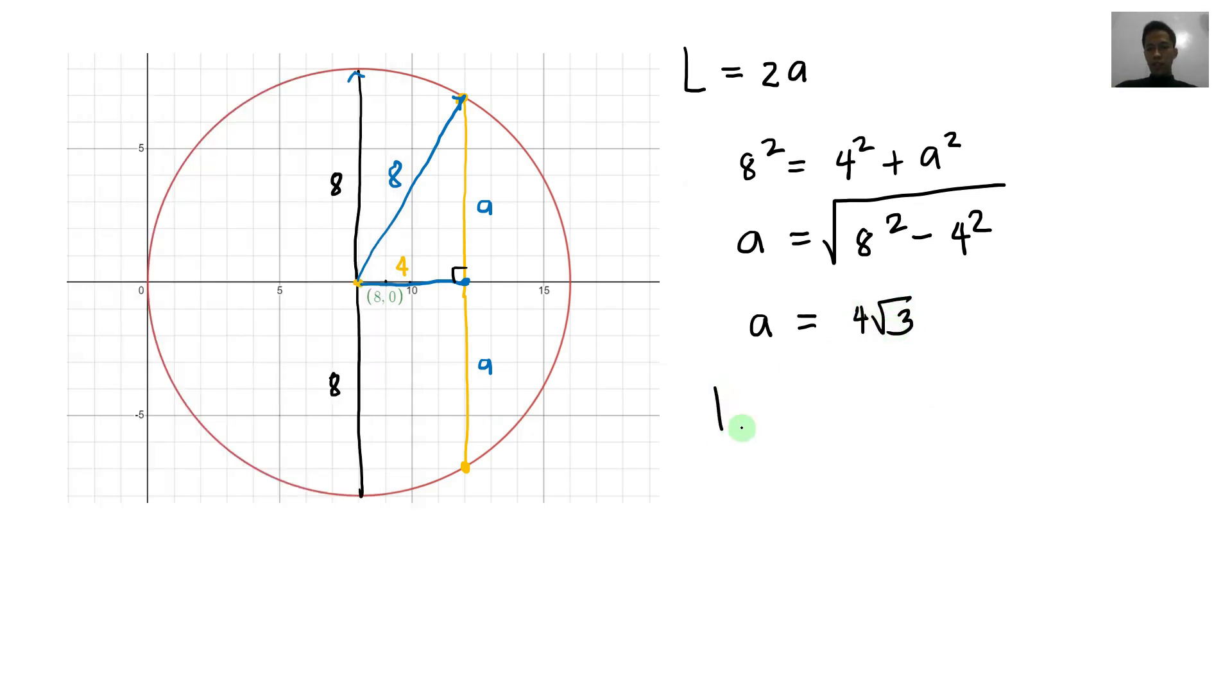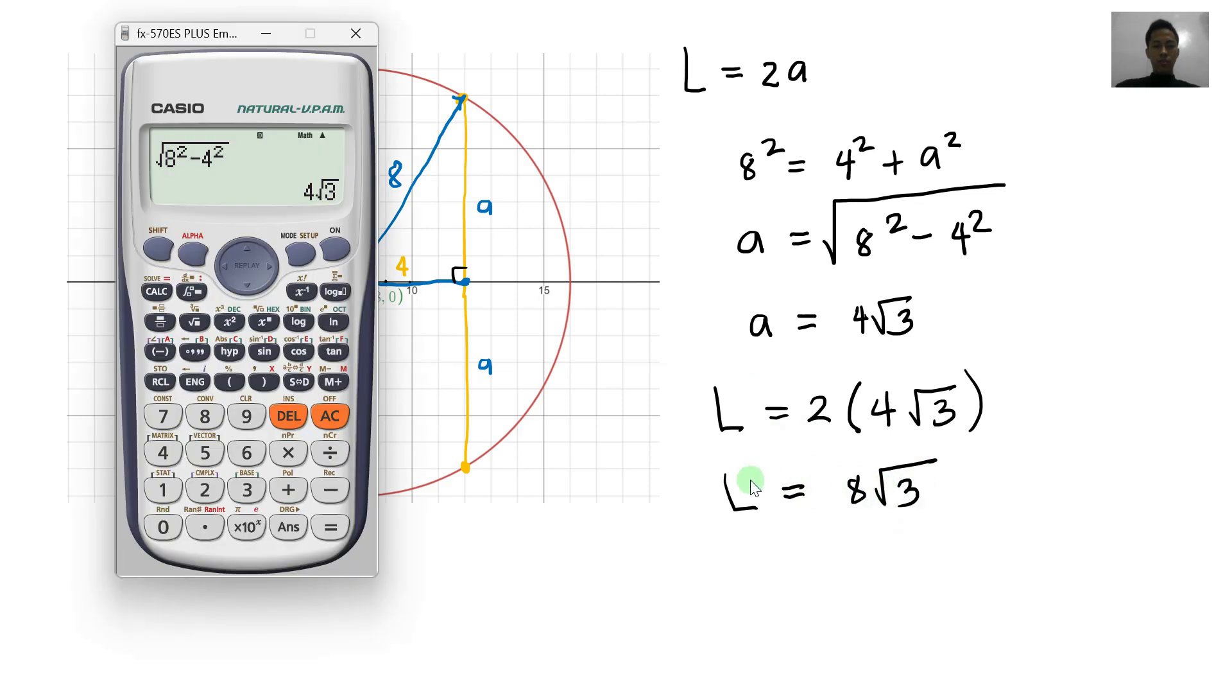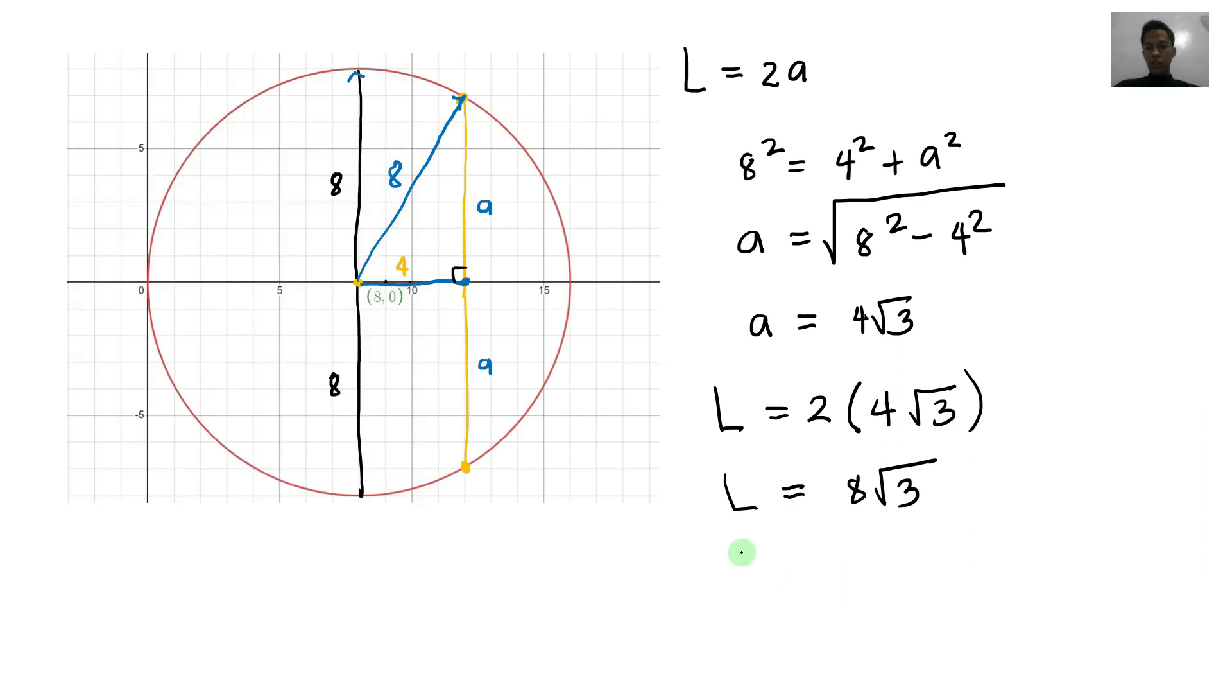So syempre, ang length of the chord natin, that is 2 times A. So A is 4 square root of 3. So we have here, length of the chord is 8 square root of 3. So times 2 lang natin to guys. Times 2. So equals. And then SD lang natin. That's equal to 13.856. So length of the chord is 13.856 units. So this is now your final answer for this problem.